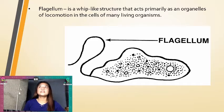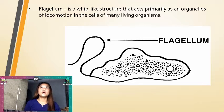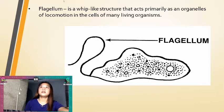Next is the flagella. The flagella is a whip-like structure that acts primarily as an organelle of locomotion in the cells of many living organisms. This is the flagella.